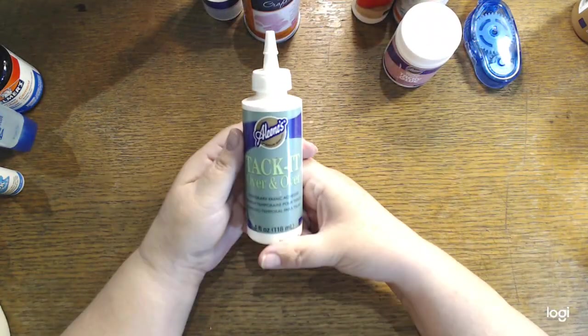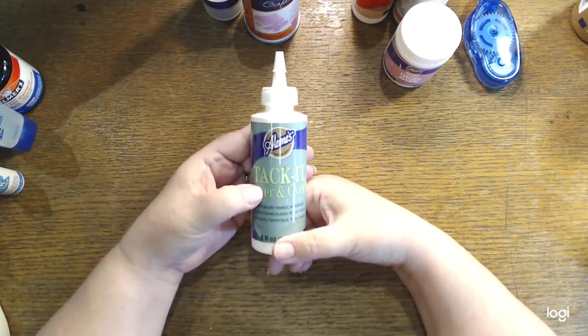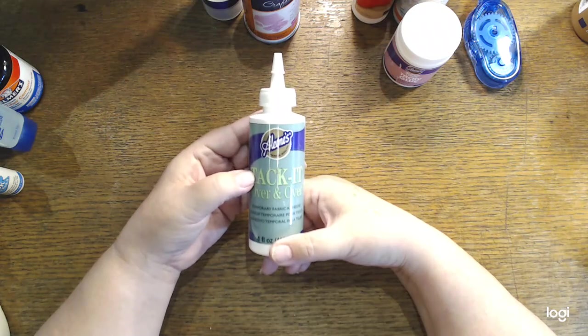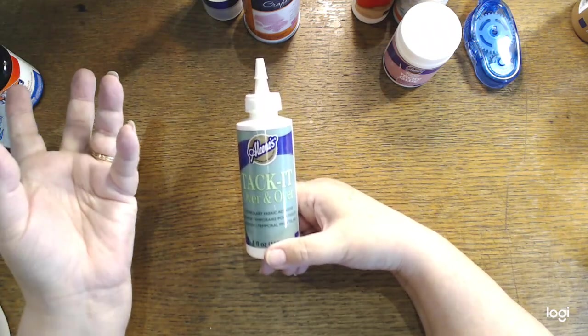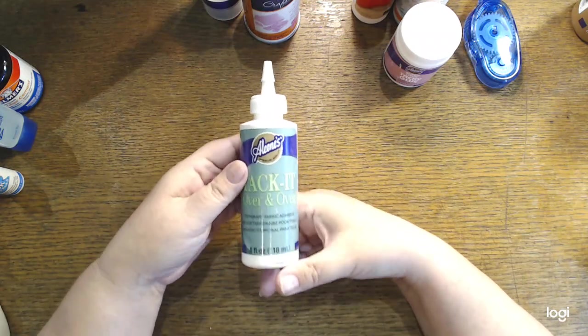This is another one I use occasionally for my rubber stamps, tack it over and over again. I can put my cling stamps that don't want to cling anymore, I can put this on it and then they'll cling to the acrylic block. So I do like this.